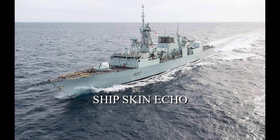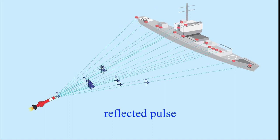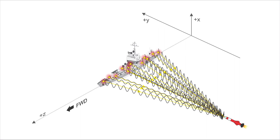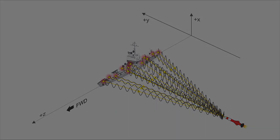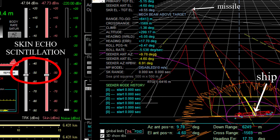Now let's talk about the skin echo from the ship — that's the target signal seen by the missile seeker. It comes from the addition of all reflections from the scatterers on the ship. Each reflector on the ship contributes a little bit, each one having a different phase and amplitude from all the rest. The result is that the skin echo naturally scintillates as the missile approaches the ship, even without propagation.